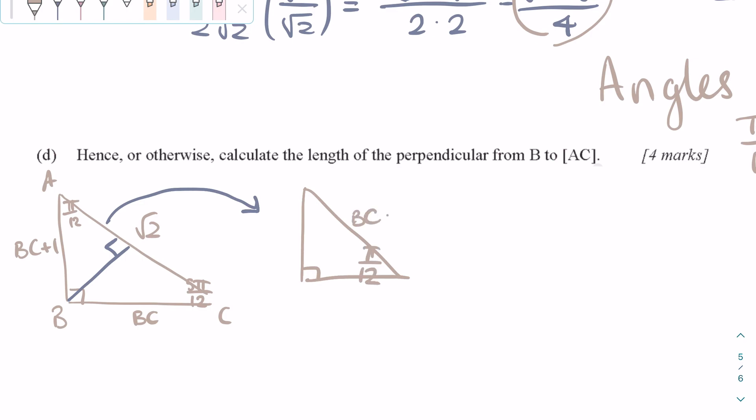I'm making the perpendicular length X, which is what we're trying to find, and the hypotenuse of this triangle is BC plus 1, and we can replace that with the numerical value of BC.